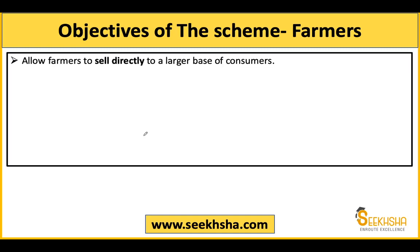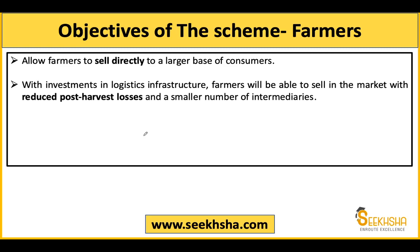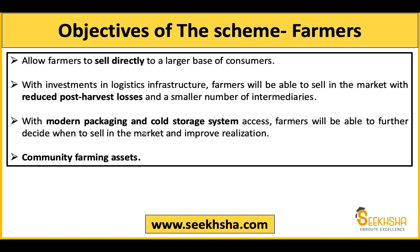From the farmer's perspective: if there is better infrastructure and better markets, the farmer will not have to depend on the middleman and can sell directly to consumers. Currently, a small farmer has no warehouse, storehouse, or cold storage, so they sell to the middleman to reduce risk of wastage. With infrastructure investment, they can sell directly, reduce post-harvest losses, and benefit from modern packaging and cold storage systems.